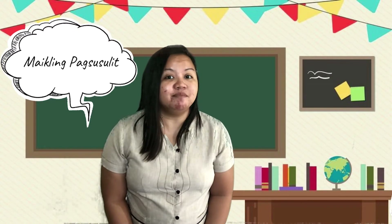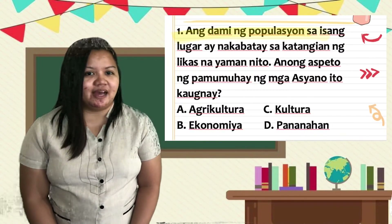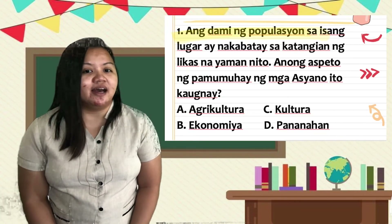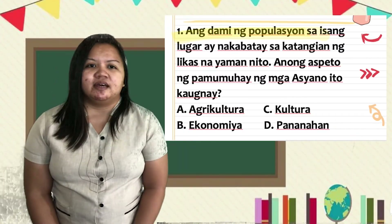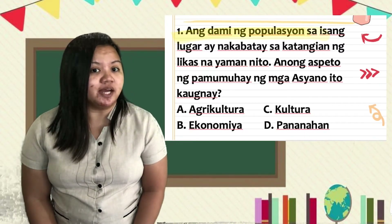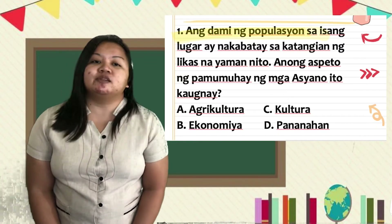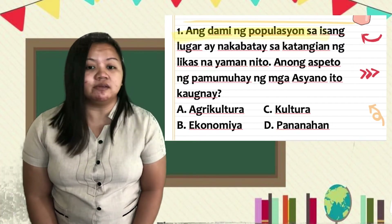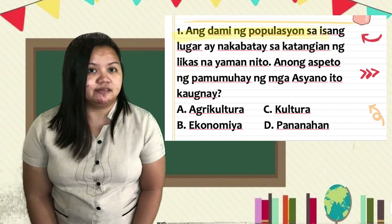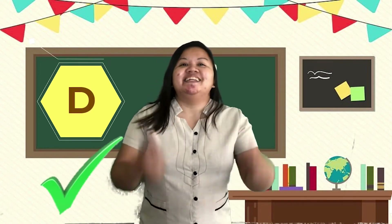Handa ka na ba para sa ating maikling pagsusulit? Sagutin natin ang mga katanungan — piliin ang titik ng tamang sagot. Heto ang unang tanong: Ang dami ng populasyon sa isang lugar ay nakabatay sa katangian ng likas na yaman nito. Anong aspeto ng pamumuhay ng mga Asyano ito kaugnay? Letter A, agrikultura. Letter B, ekonomiya. Letter C, kultura. O letter D, panahanan. Kung ang sagot mo ay letter D — tama ang iyong sagot!